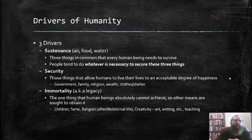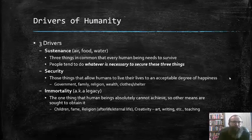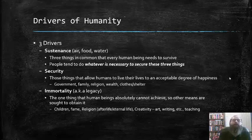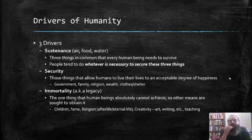The second driver is security — those things that allow humans to live their lives to an acceptable degree of happiness. This includes government, which is formed primarily to obtain security. It also includes family, whose bonds provide a sense of security, as well as religion, wealth, clothing, and shelter. All of these things provide the sense of security that humans strive to achieve, and without it, wild and unpredictable things may happen.